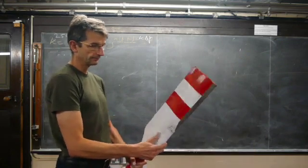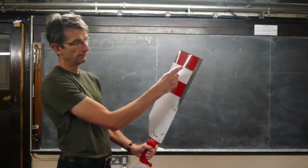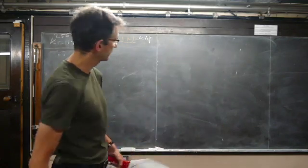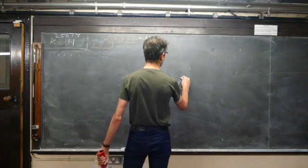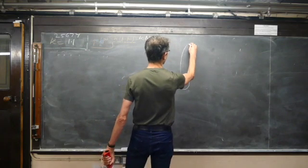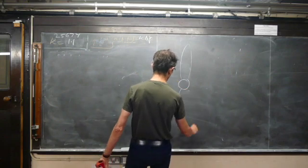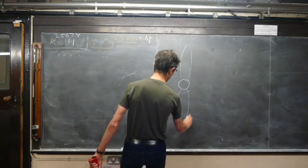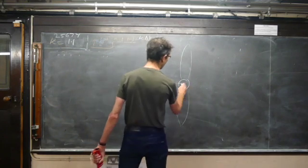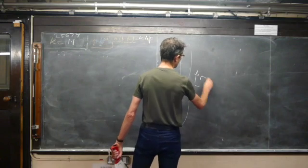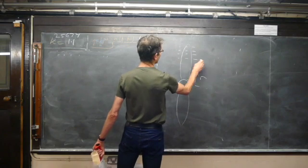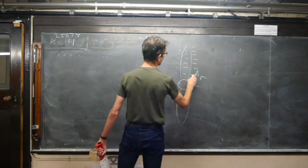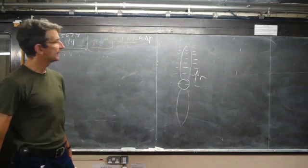So blade elements: if we take a propeller blade, there's the central spinner, there's a blade, and there's the two blade propeller, for example. Radial notation. We split the blade up into these blade elements.